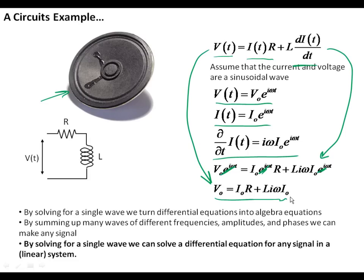So what have we learned from this? That by solving for a single wave, we turn differential equations into algebra solutions by summing up many different types of frequencies through the Fourier transform, and the waves have different frequencies, amplitudes, and phases, we can make any signal.